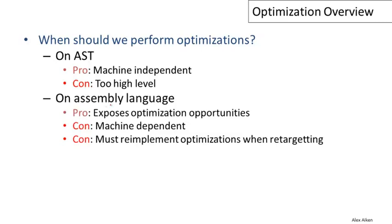Another possibility would be to perform optimizations directly on assembly language. The advantage here is that all the details of the machine are exposed — we can see everything the machine is doing and talk about all of its resources. In principle, any optimization we want to perform can be expressed at the assembly language level. However, a disadvantage is that optimizations on assembly language are machine dependent, and we would potentially have to reimplement our optimizations for each new kind of architecture.